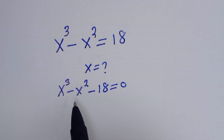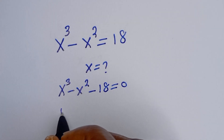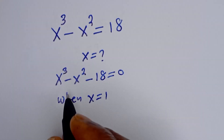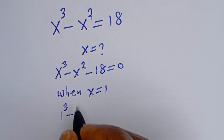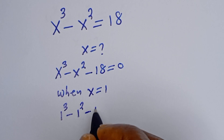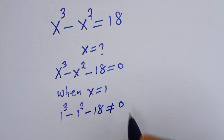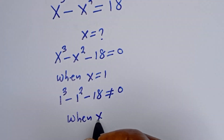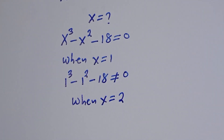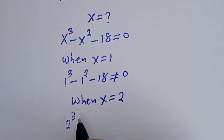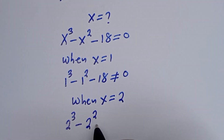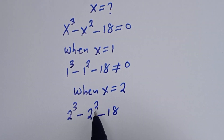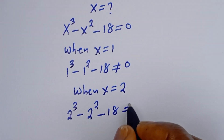We can get one of the roots of this equation by testing values. When s is equal to 1, we get 1 to the power of 3 minus 1 squared minus 18, which is not equal to 0. When s is equal to 2, we get 2 to the power of 3 minus 2 squared minus 18. That is 8 minus 4 minus 18, which is not equal to 0.